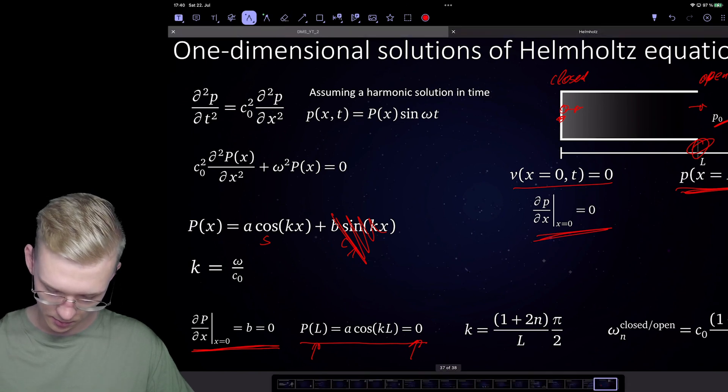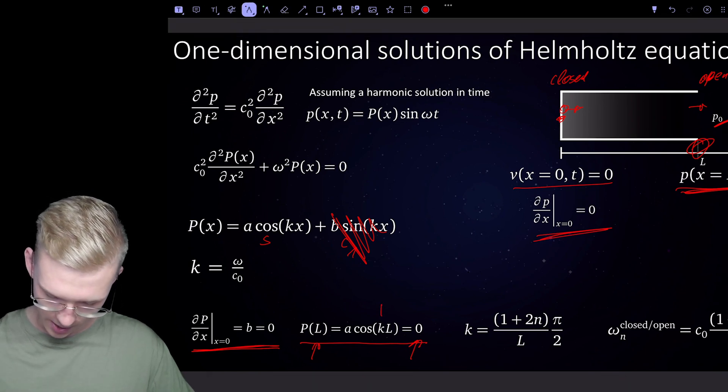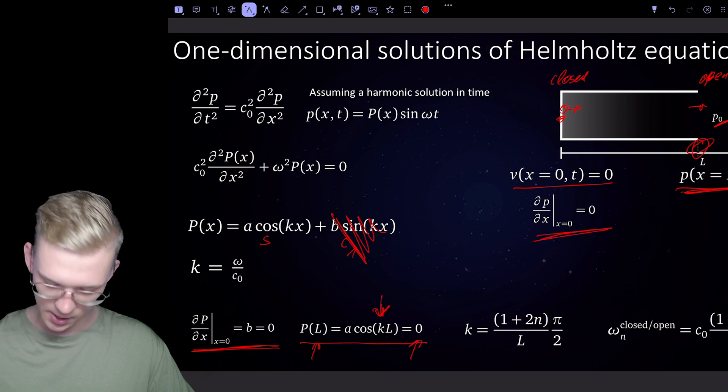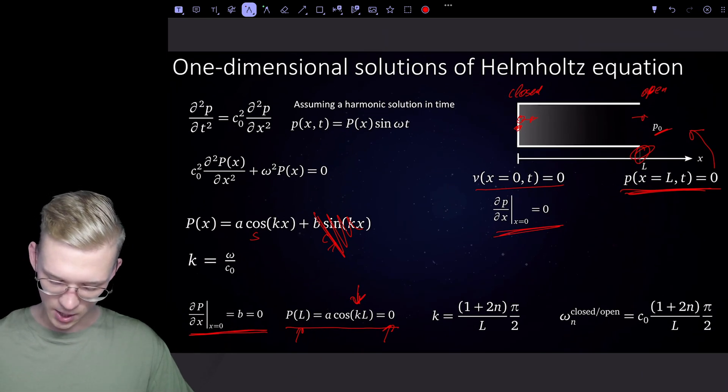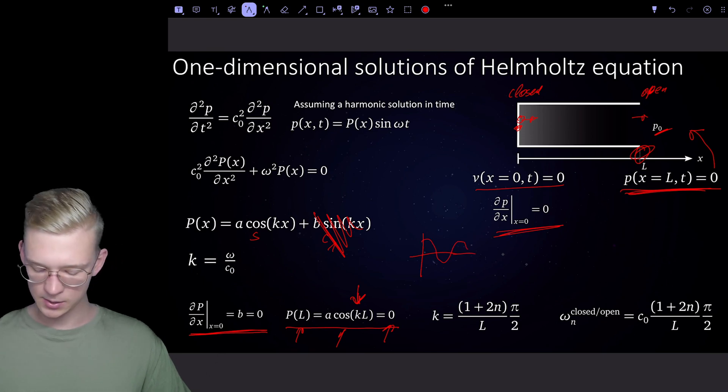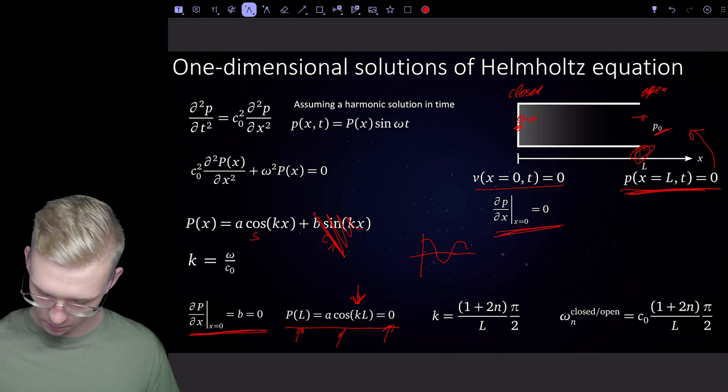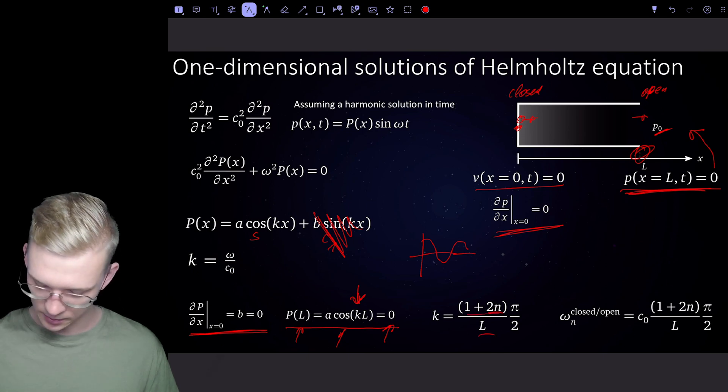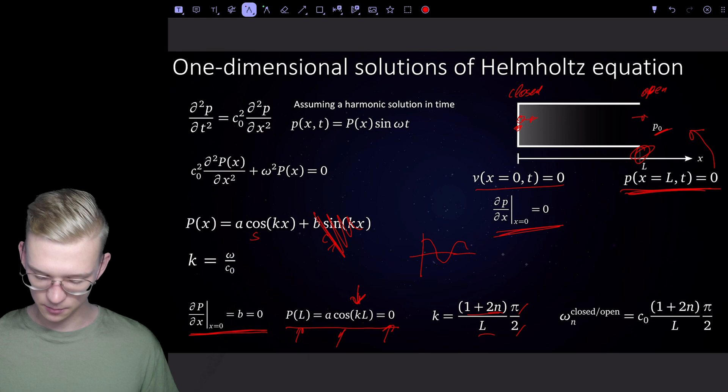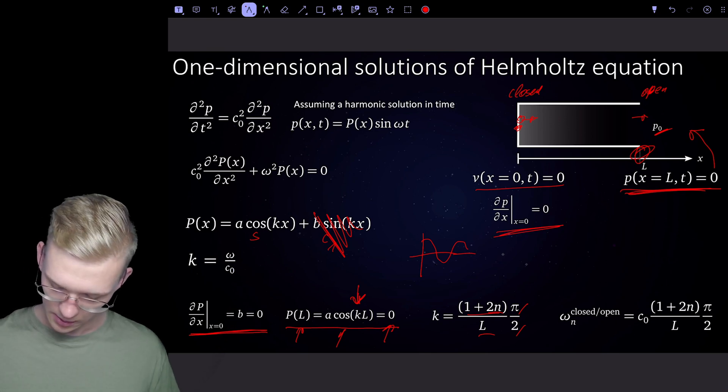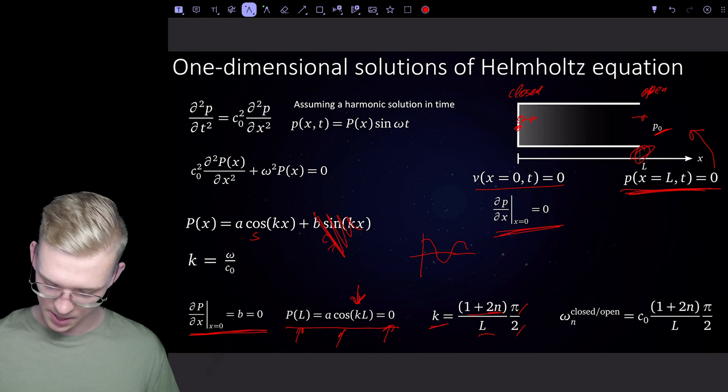We want to see for which k, because l is our fixed length, for which k is the cosine zero. We can say that the cosine is zero if k is (1 + 2n) divided by l times pi divided by two.